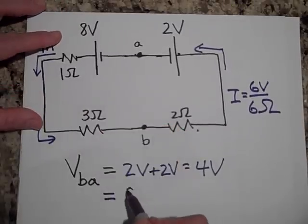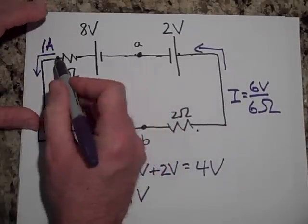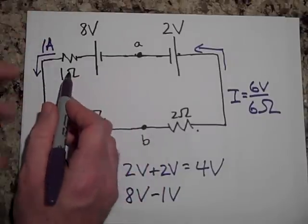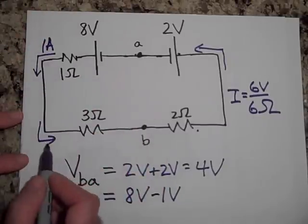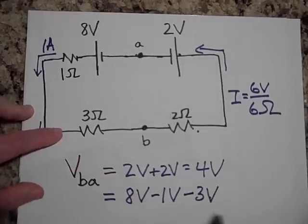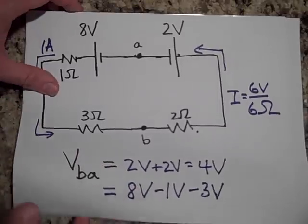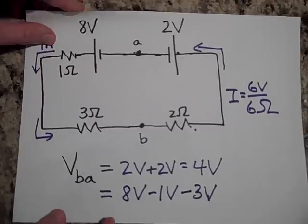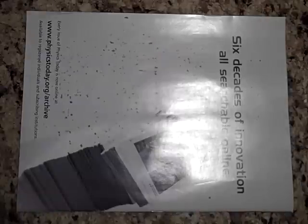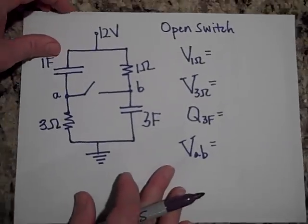I would go up 8, then I would go down 1, because I'm going with the current, so that's ohms losses, that's 1 volt. And then I would go down 3. Yeah, so I'm getting 4 volts again. The voltage at B with respect to A, B is 4 volts higher than A. All right, moving along.